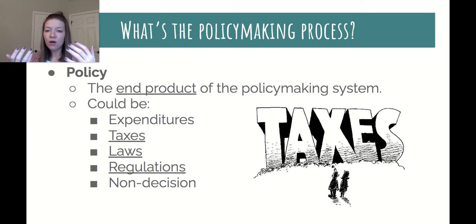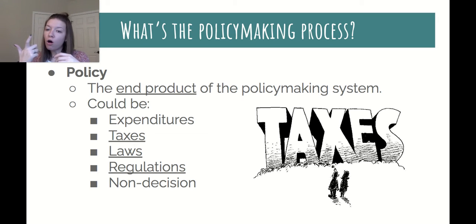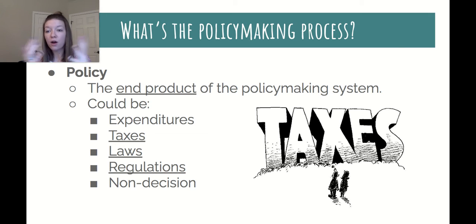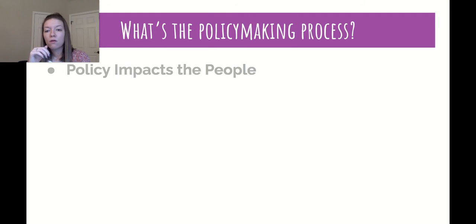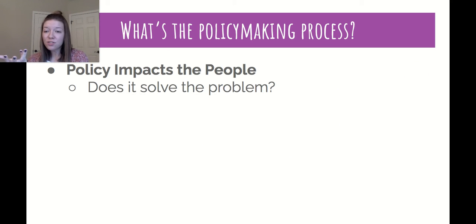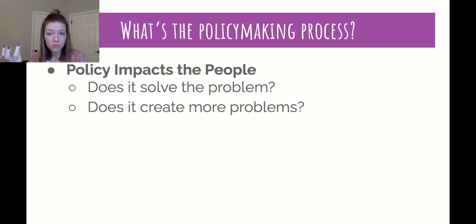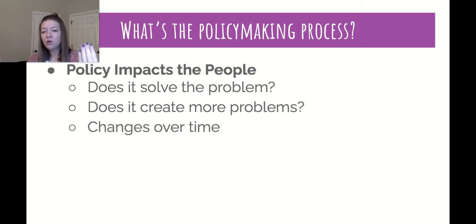The policy itself is the end product — what we end up with. This could be an expenditure where the government pays for something, a new tax on the people, a new law or regulation, or sometimes it's decided that nothing needs to be done and it's a non-decision. Policy then impacts the people because these are laws and regulations that people must abide by, and the questions we ask are: does the policy solve the problem, and does it create more problems?